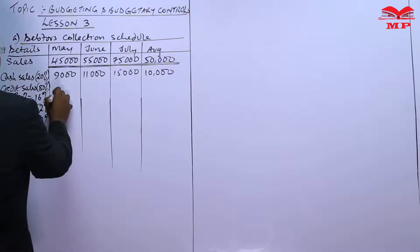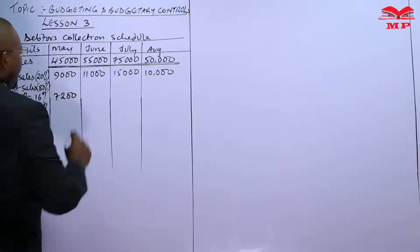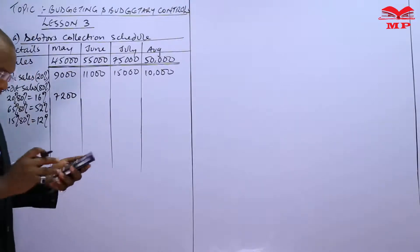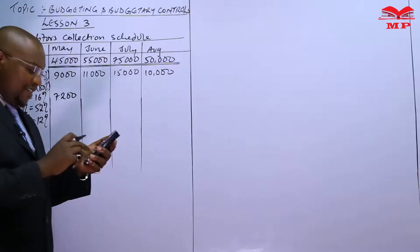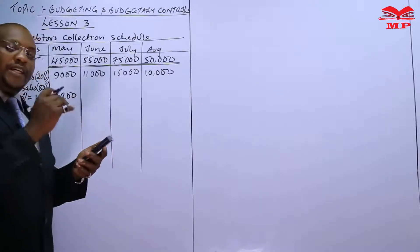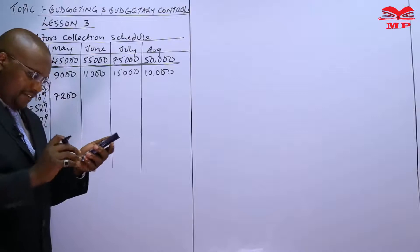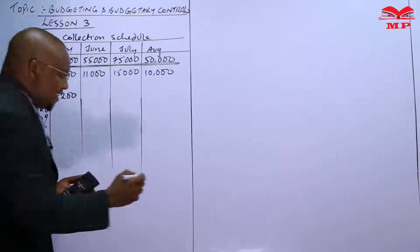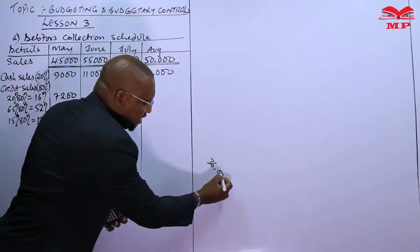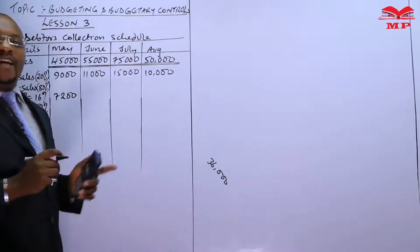This is 7,200. Remember it's just like you take first of all 80% of 45, so it is 0.8 times 45, that's the first bit. So you get like 36,000, that is the credit sales.